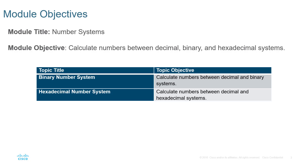The nice thing is with decimal, binary, and hexadecimal, all numbers can be represented. There are some numbering systems out there that are not necessarily able to represent all numbers — it just depends on what we're trying to accomplish. Octal, for example, base 8, does not allow for representation of all numbers. So there are tons of numbering systems out there; it's just a matter of which ones we're going to be able to use.